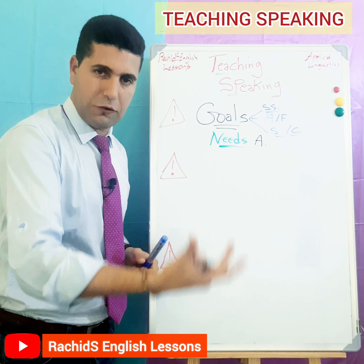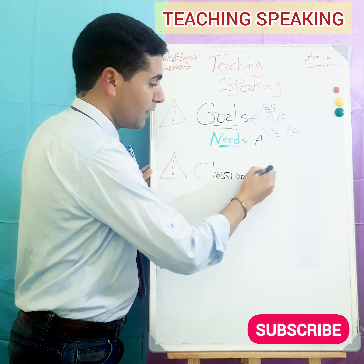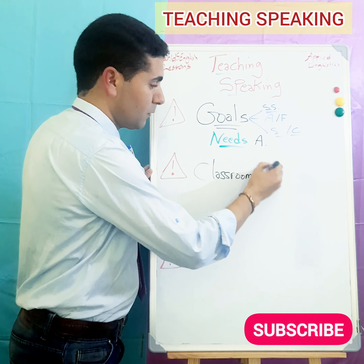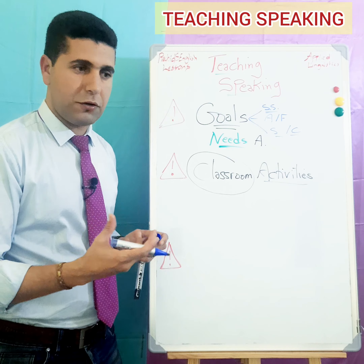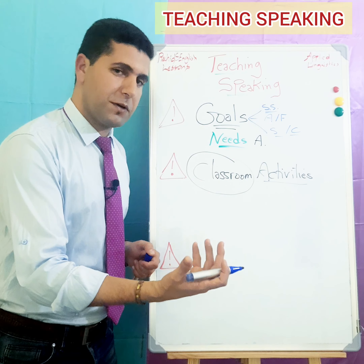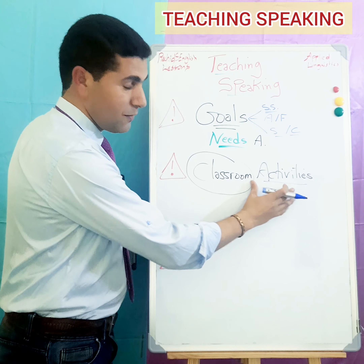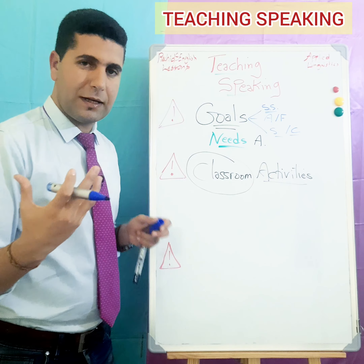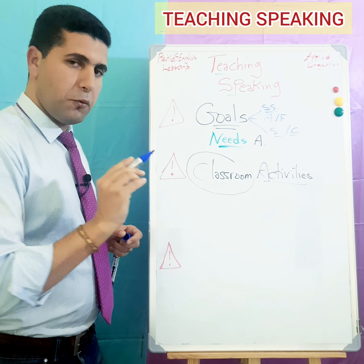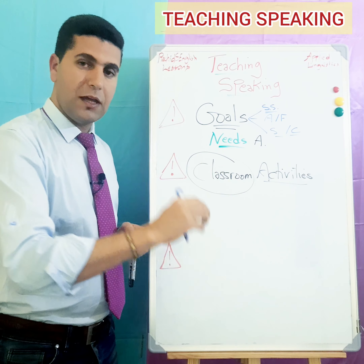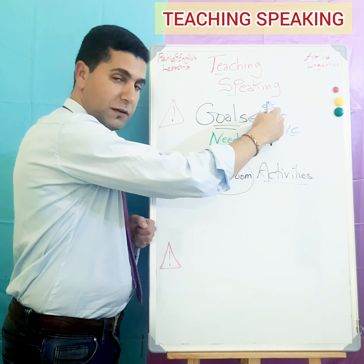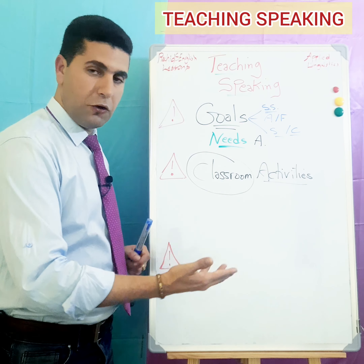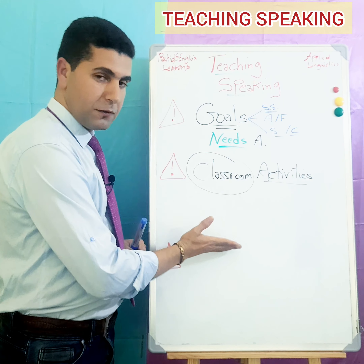When we determine the goals, we go to step number two: the implementation of the lesson, which we can consider as classroom activities. Classroom activities can be different — for example, dialogue work, information gap, describing a picture, jigsaw activities like jigsaw reading, role play, and so on. These are kinds of activities you can use in the classroom for teaching speaking. When we talk about classroom activities, you also have to take into consideration the speaking skills that students need in each activity.